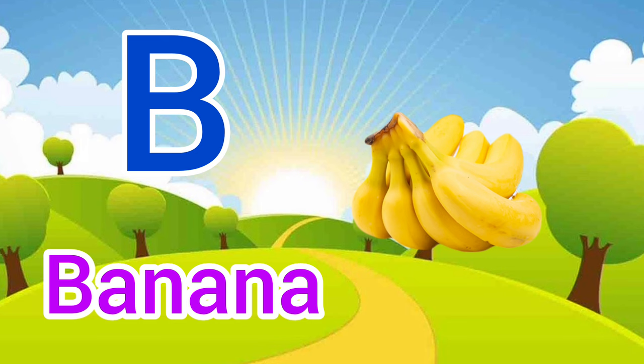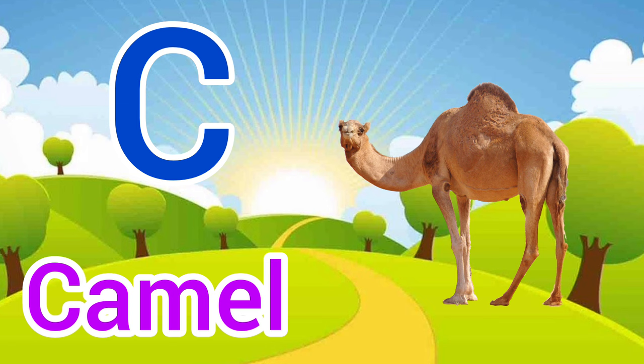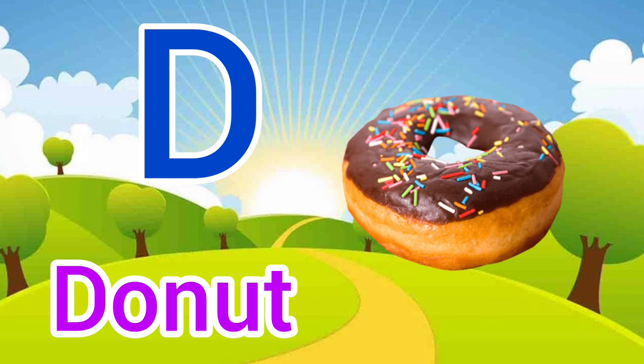C for camel, camel means oot. D for donut, donut means donut.